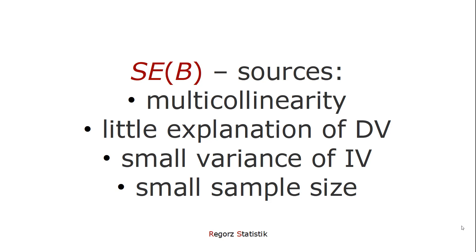Multicollinearity is one possible source for high standard error, but it's not the only one. It could be that there is just little explanation of the dependent variable. It could be that you have a small variance of the independent variable. And it could be that you have a very small sample size. All those are possible sources for inflated standard error and then for a low test statistic and a high p-value. And O'Brien's point is, it's not a good idea to look at one of those possible influences in isolation.